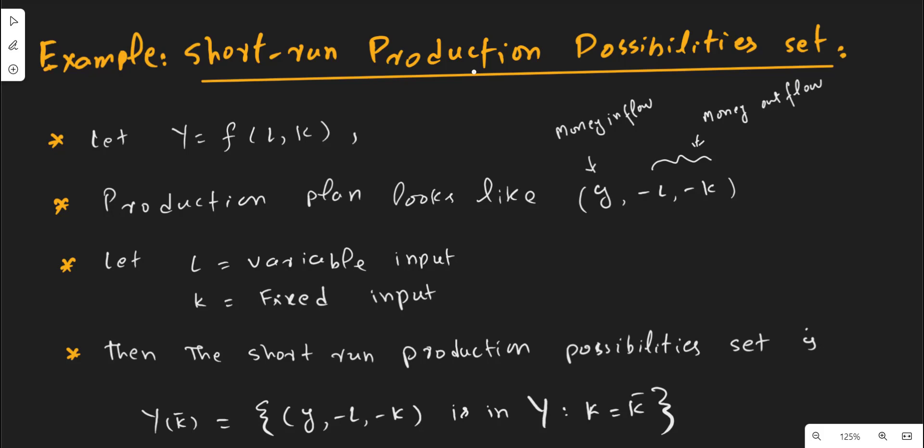In this video we explain an example on the short-run production possibility set. As we know, the short run is a time period in which at least one factor input remains constant or is fixed. So in our production possibility set, at least one factor would remain fixed or constrained.